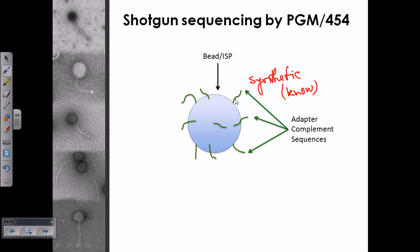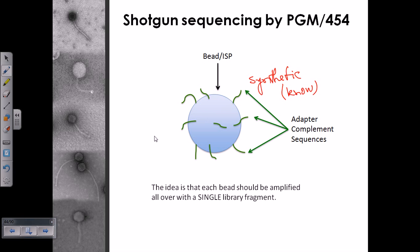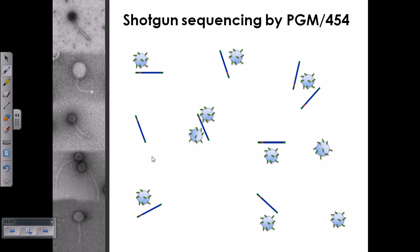The oligo sequence on the bead is complementary to the adapter added to both terminals of the gene to be sequenced — the green-colored adapters we saw earlier. Because they are complementary, the DNA fragments bind to the adapter sequences on the beads.